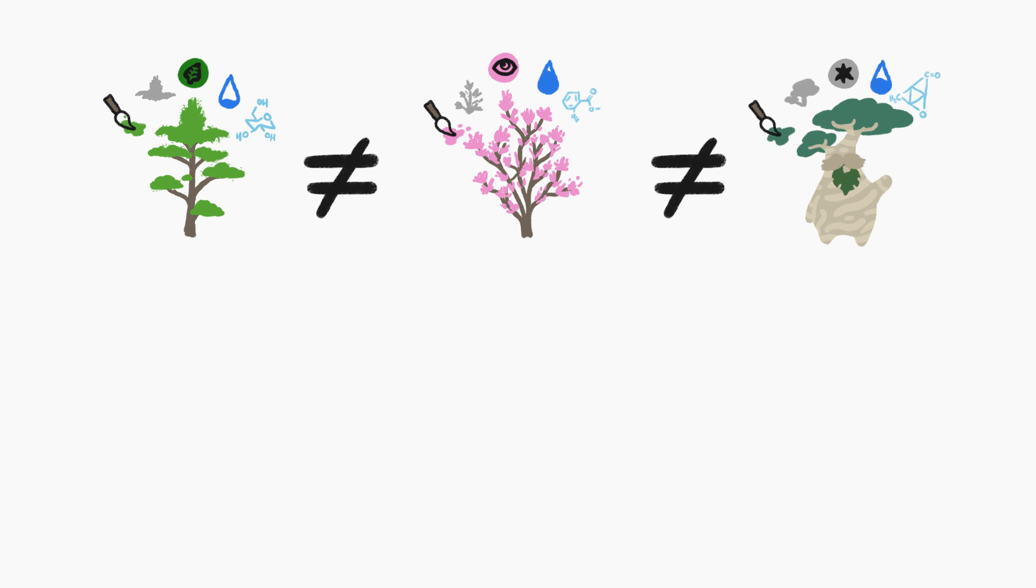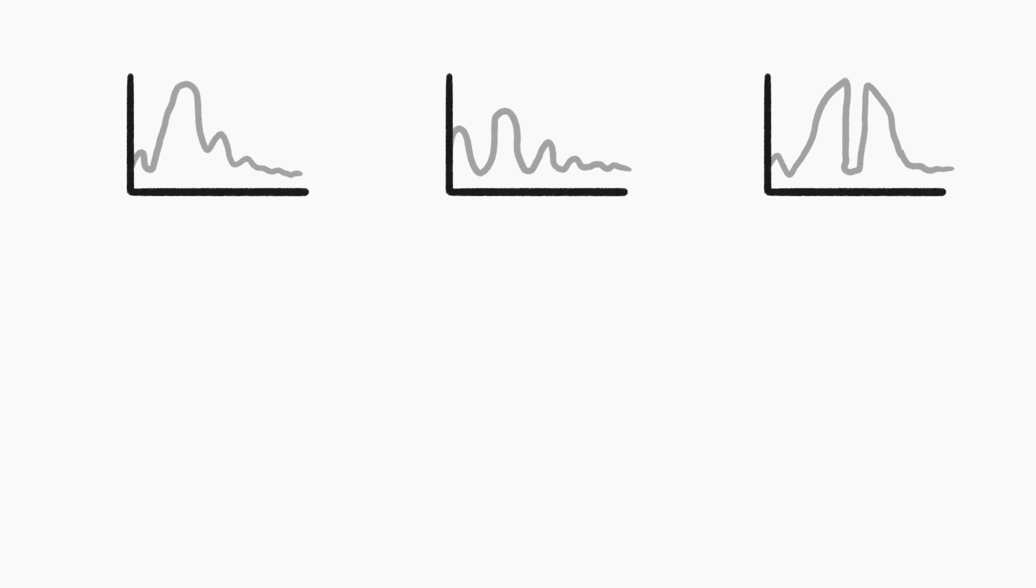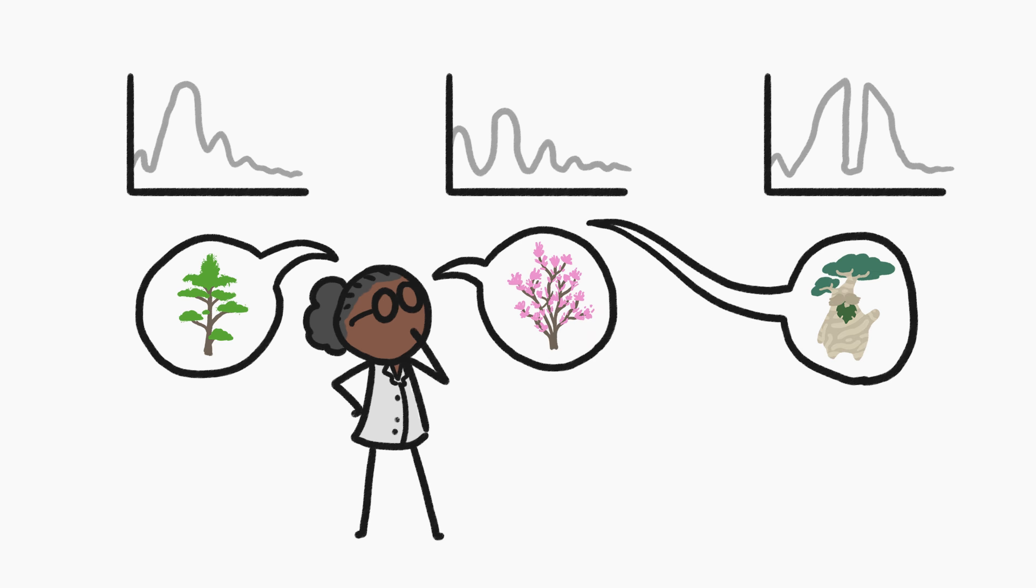Since all tree species vary slightly in these kinds of characteristics, each species of tree has a distinctive spectral fingerprint. Which means it's possible, based on a tree's spectral fingerprint alone, to determine its species.